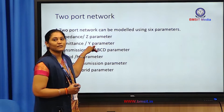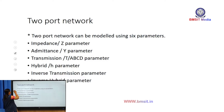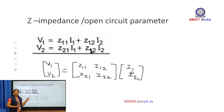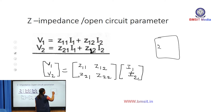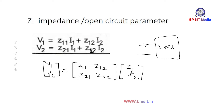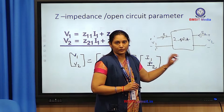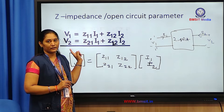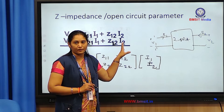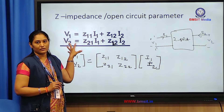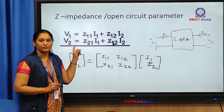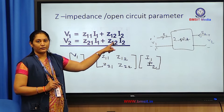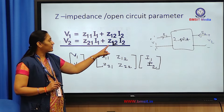In the last session, we studied what the impedance parameter is and why it is called the open-circuit parameter. For the Z parameter or open-circuit parameter, the modeling equations use V1 and V2 as dependent variables and I1 and I2 as independent variables. The currents are the independent variables and the voltages across the terminals are the dependent variables.